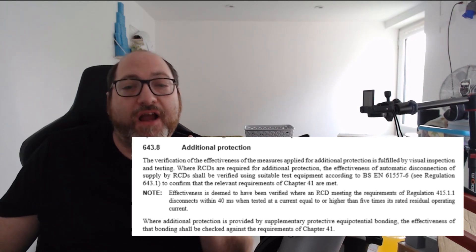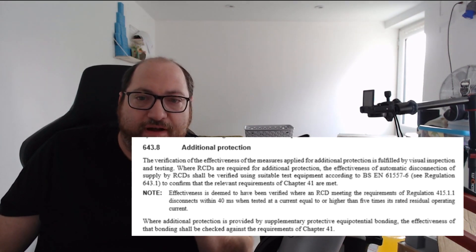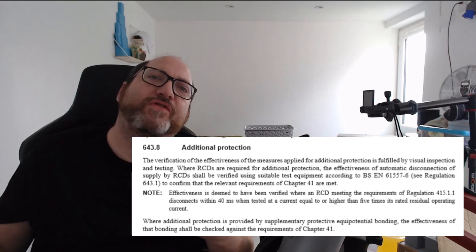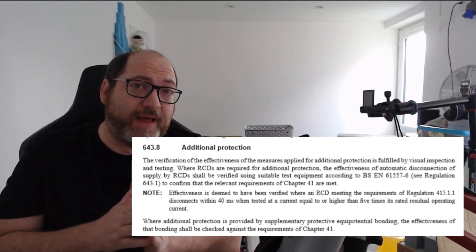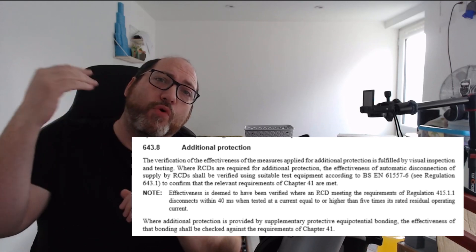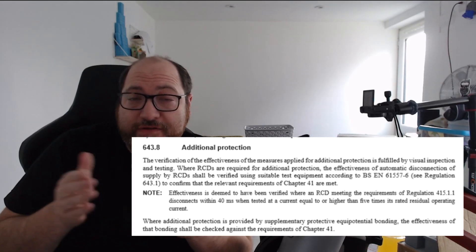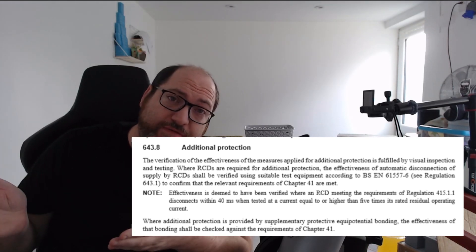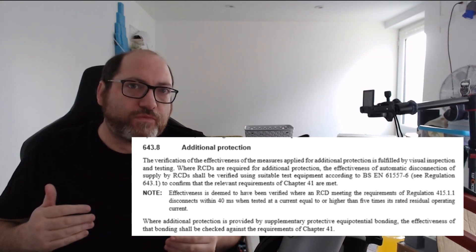What it does say is the effectiveness is deemed to be achieved or verified if it disconnects within 40 milliseconds tested at a current equal to or higher than five times IΔn. So what this means is it could be five times — 150 milliamp — or it could be more. We could apply more current to the test, and that's obviously what allowed the 250 milliamp option in.